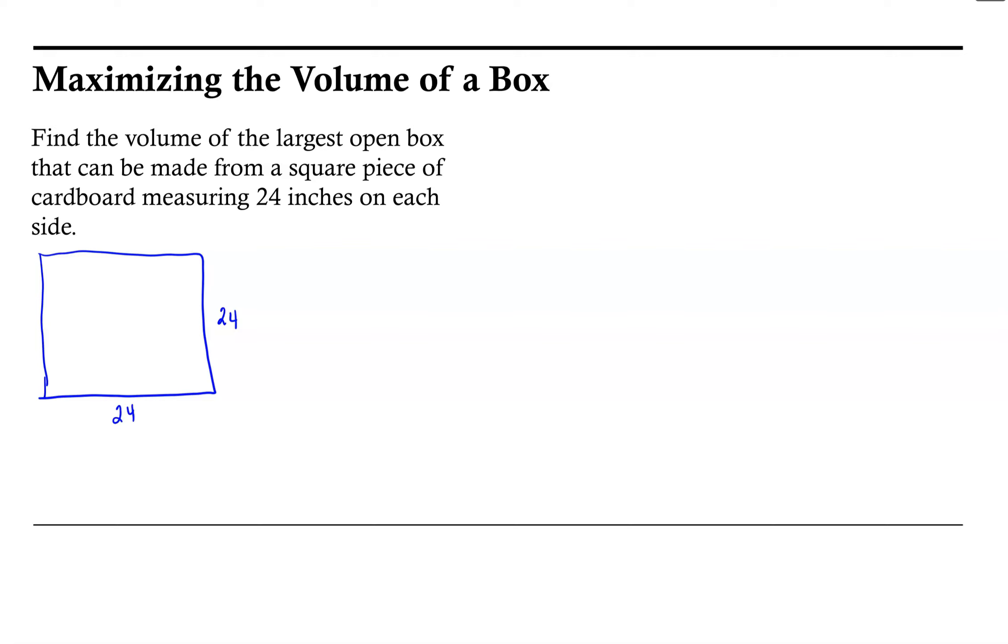We know that each side is 24 inches. What we want to do is make an open box out of this, which means we're going to have to cut corners from the cardboard in order to fold up and create the sides of the box. So let's go ahead and represent those corners here that we're going to have to cut out so that we can create a box.